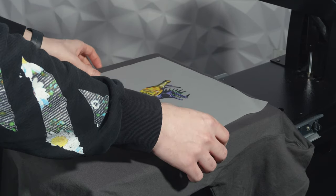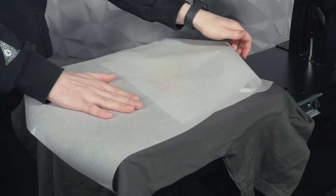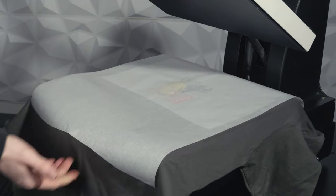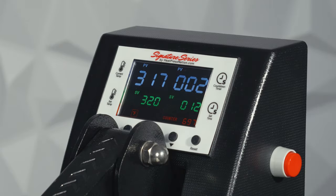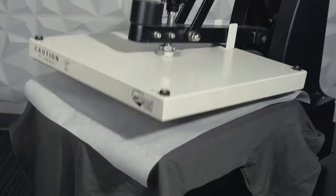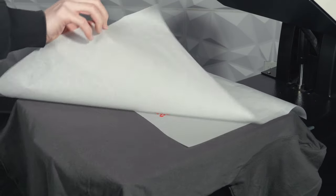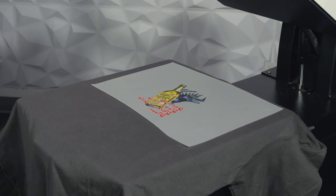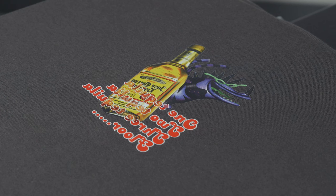Then, position your transfer, place a cover sheet over it, and press. Once it's done, wait about 10 to 20 seconds and peel. Re-press with the cover sheet to seal the transfer onto your garment and you're all done.